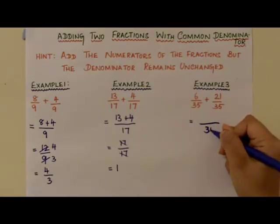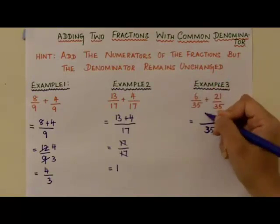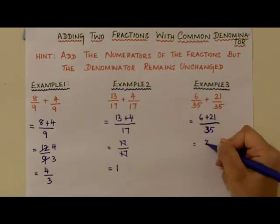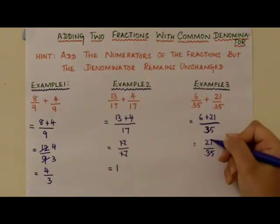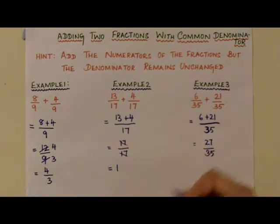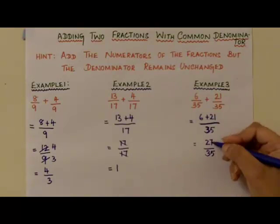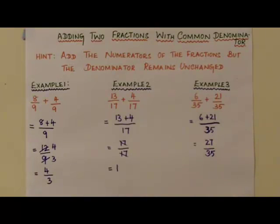35 is the denominator and add 6 and 21. So 6 and 21 is 27 divided by 35. So 27 can be written as 9 times 3 and 35 can be written as 7 times 5. This cannot be simplified further.